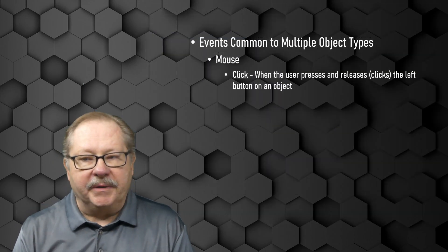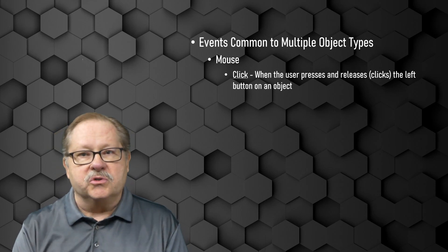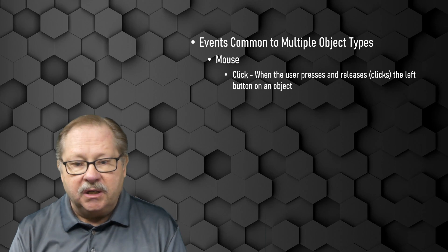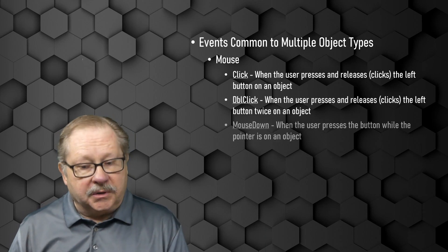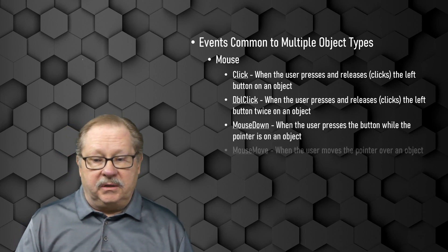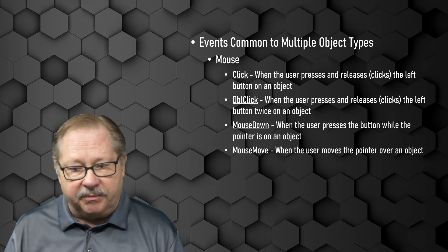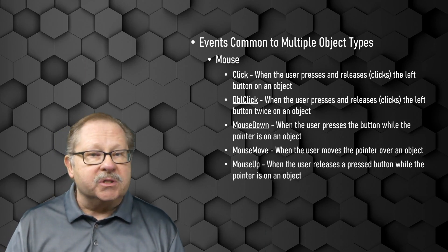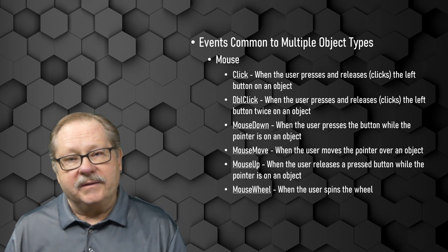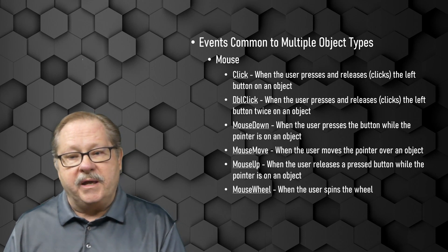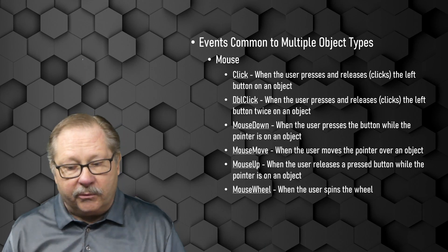The events most common to multiple object types — such as controls, forms, and reports — are mouse events. The click event is common for most. Also double click, mouse down, mouse move, mouse up, and the mouse wheel. All of those can be captured as events that the mouse might trigger when it's within the boundaries of your form.